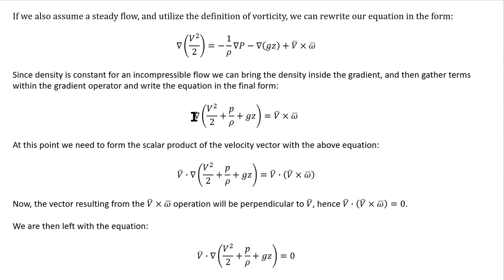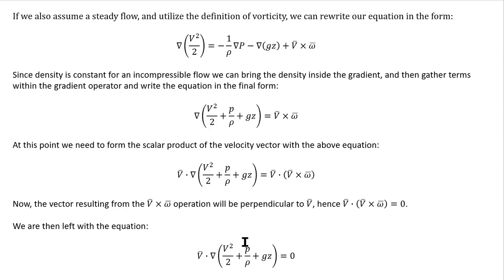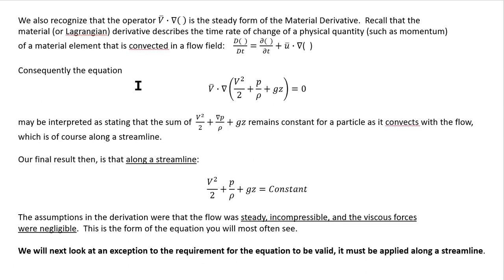To proceed, we take the scalar product of the velocity vector on both sides of the equation — v dot grad of the parenthetical terms, and v dot v cross omega on the right. Since v cross omega gives a vector perpendicular to both v and omega, dotting that with v gives zero, because there's no component in the direction of v. So that term becomes zero.